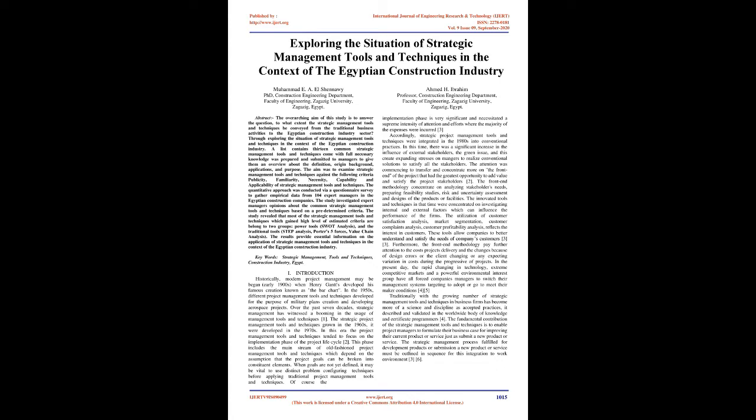In the 1950s, different project management tools and techniques were developed for the purpose of military plans creation and developing aerospace projects. Over the past seven decades, strategic management has witnessed a booming in the usage of management tools and techniques. The strategic project management tools and techniques grew in the 1960s and were developed in the 1970s. In this era, the project management tools and techniques tended to focus on the implementation phase of the project life cycle.